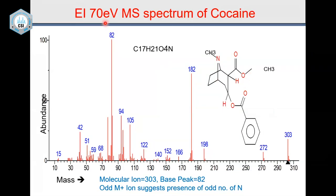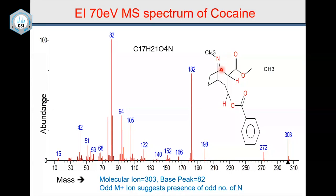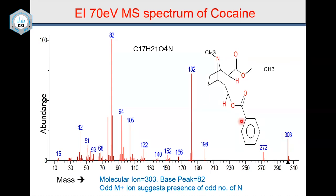When you do cocaine at 70 electron volts anywhere in the world, you will get the same mass spectrum. Cocaine is a very important compound as it causes much chaos — we need to stop its smuggling. Please remember the three important ions: 303, 182, and 82. 82 is the base peak, 182 is another very intense peak, and 303 is the molecular ion with reasonable intensity. I will refer to these in future presentations.